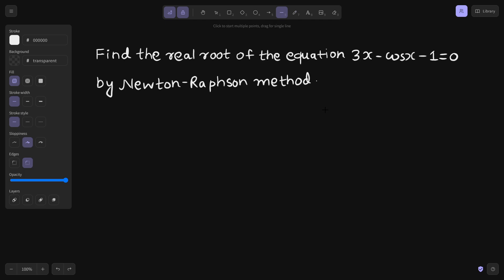Hello everyone, Namaskar, Raj Krishna this side. Let us solve one more problem from Newton-Raphson method. Find the real root of the equation 3x minus cos x minus 1 equals 0 with the help of Newton-Raphson method.